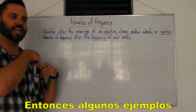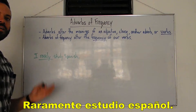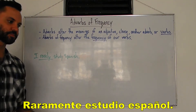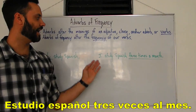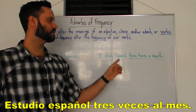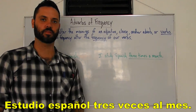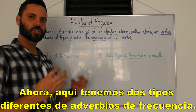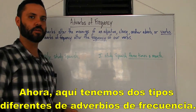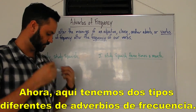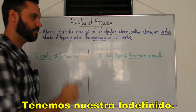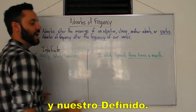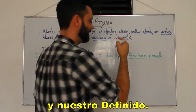So some examples: I rarely study Spanish, or I study Spanish three times a month. Here we have two different types of adverbs of frequency — we have our indefinite and our definite.